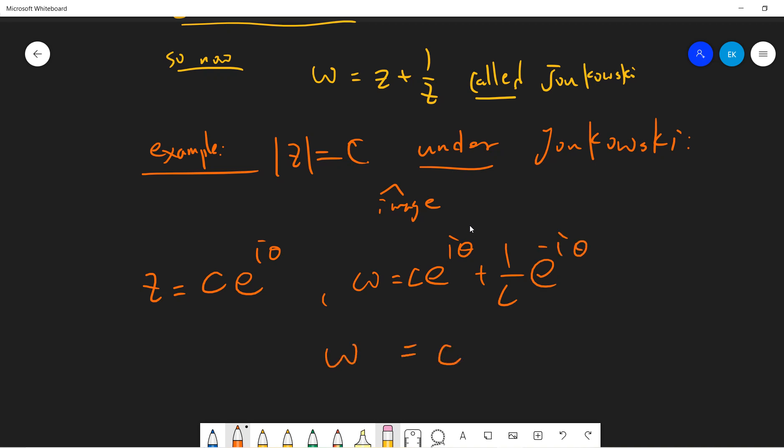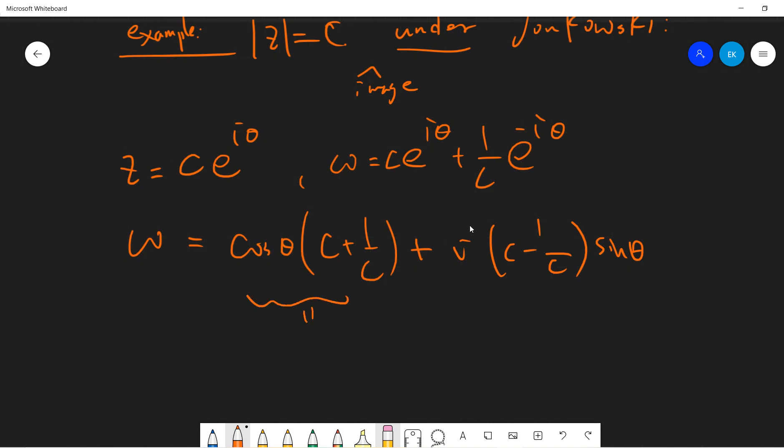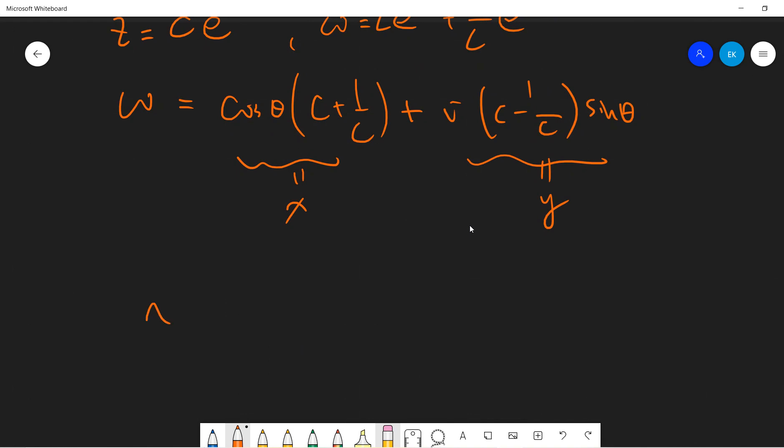So this is omega equals c cosine theta. OK, so let's write. Right. Omega is cosine theta times (c plus 1 over c) plus i times (c minus 1 over c) sine theta. OK, so this is x. Right. This is y.